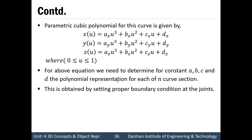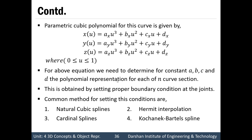This is obtained by setting proper boundary conditions at the joints. The common methods for setting these conditions are: Natural Cubic Spline, Hermit Interpolation, Cardinal Spline, and Kochanek-Bartels Spline. Out of these four, the first two will be covered in this video and the next two in the next video.